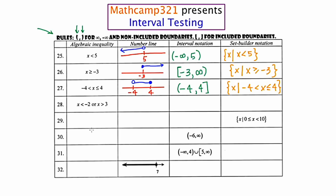Number 28 is another compound inequality: x is less than negative 2, or x is greater than 3. Let's get that number line written down — we've got negative 2 and 3. x is less than negative 2, so this is going to be an open circle and shading to the left, or x is greater than 3. This is going to be our first occurrence of requiring two intervals, because there are two pieces that are blue. For the leftmost piece, we're going to say negative infinity to negative 2, with a parenthesis.